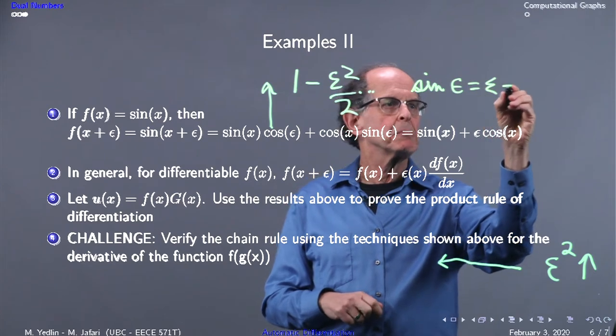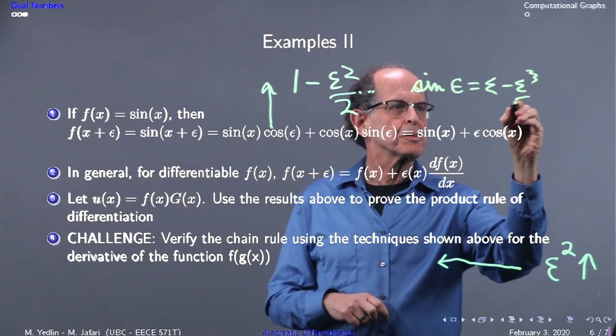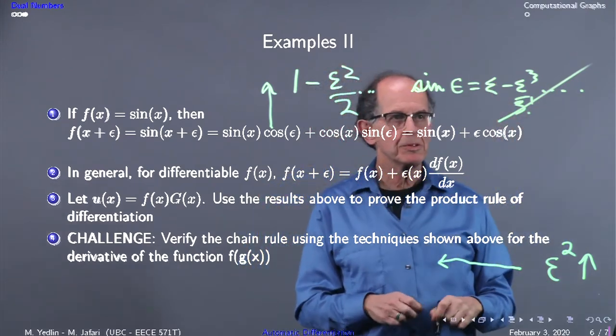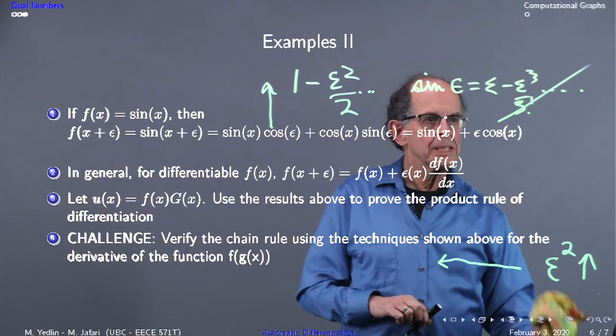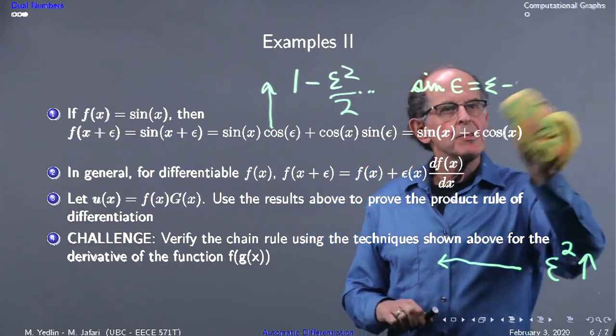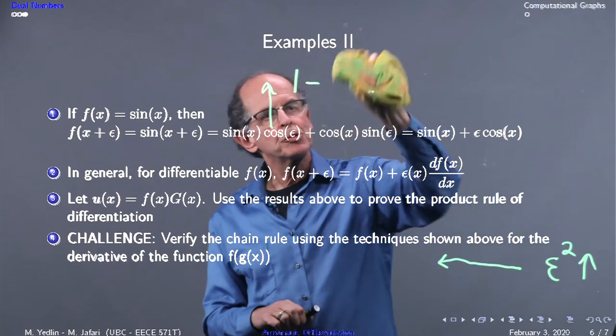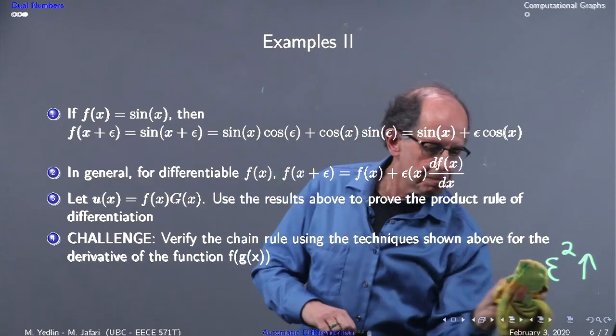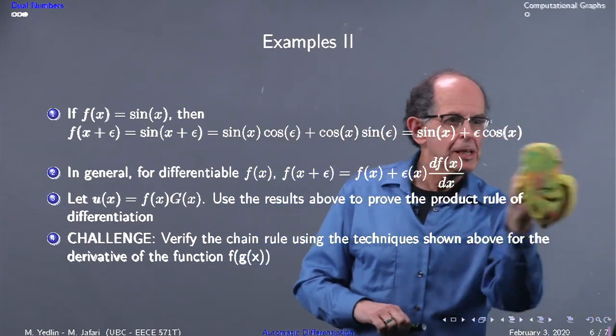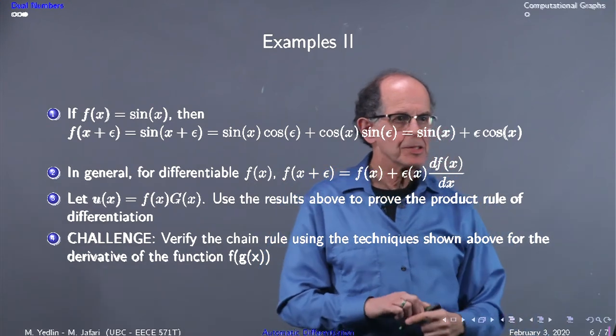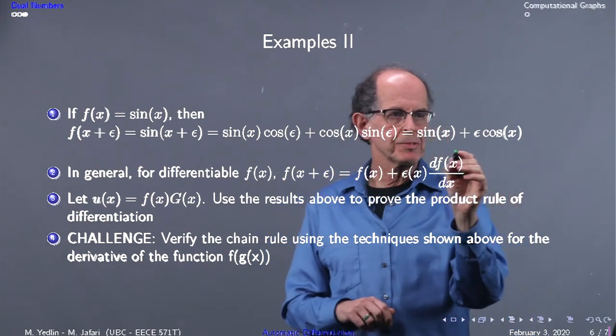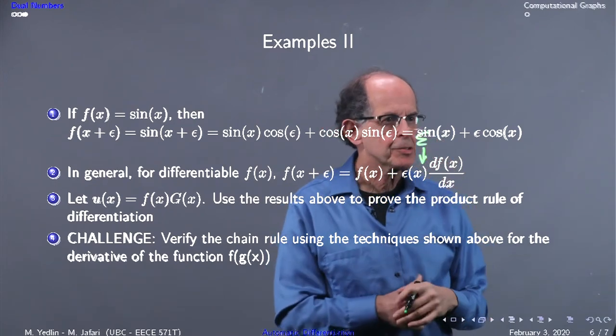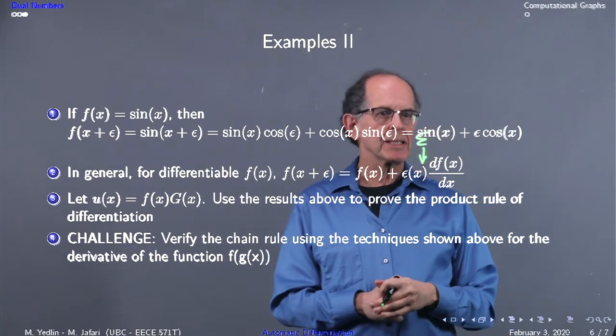Sine of epsilon equals epsilon minus epsilon cubed over three factorial, and these all disappear because epsilon squared equals zero. This gives us a hint as to what happens in general. f(x + epsilon) equals f(x) plus epsilon df/dx. There shouldn't be an x in front here—that's a typo.